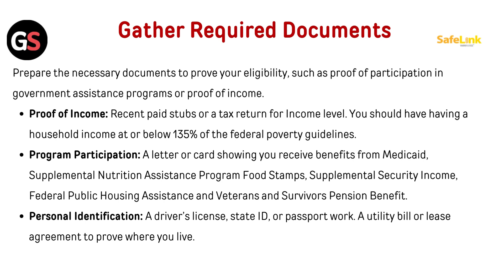Gather required documents. Prepare the necessary documents to prove your eligibility, such as proof of participation in a government assistance program or proof of income — for example, recent pay stubs or tax returns showing your income level. You should have a household income at or below 135% of the federal poverty guidelines.